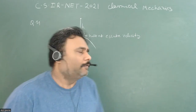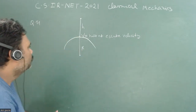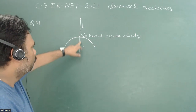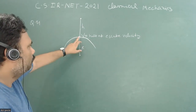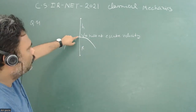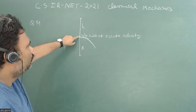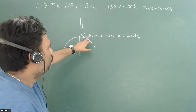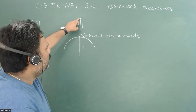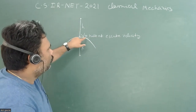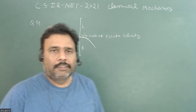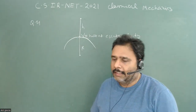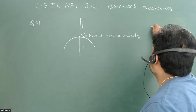The problem setup: we have the surface of the Earth, the center of the Earth, and R is the radius of the Earth. A particle of mass m is thrown from the surface with velocity v and reaches a height h. The velocity v is half of the escape velocity.